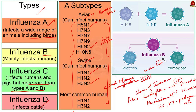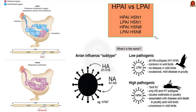The avian influenza virus has multiple strains, similar to how COVID-19 had multiple strains and variants. These strains can be divided into two categories based on their ability to cause disease in poultry: highly pathogenic avian influenza (HPAI) and low pathogenic avian influenza (LPAI).